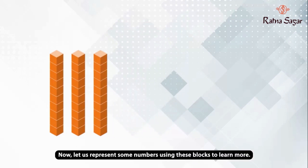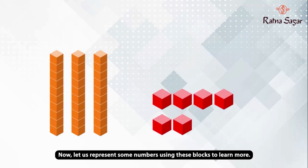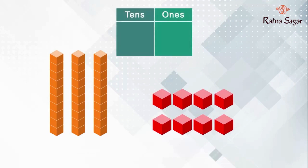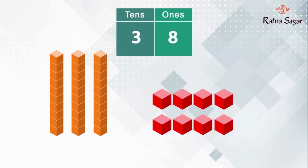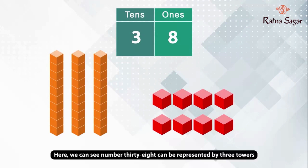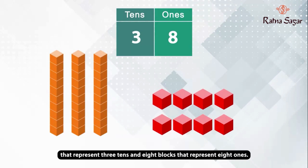Let us represent some numbers using these blocks to learn more. Number 38 can be represented by 3 towers that represent 3 tens and 8 blocks that represent 8 ones.